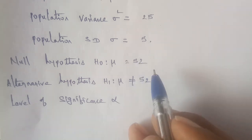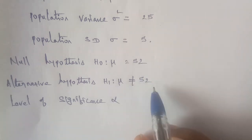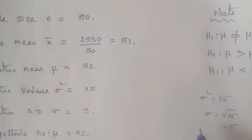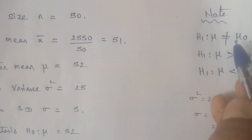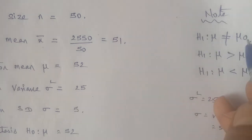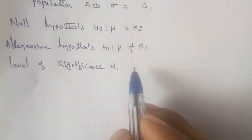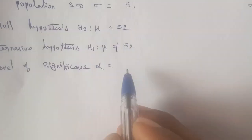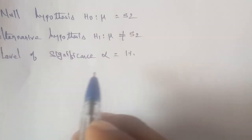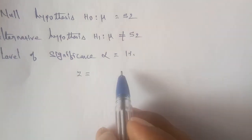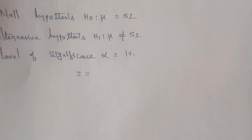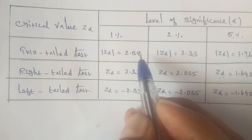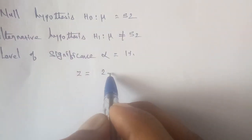Since H₁: μ ≠ μ₀, it is a two-tailed test. The level of significance α = 1%. For a two-tailed test at the 1% level, the critical value from the Z table is Z = 2.58.